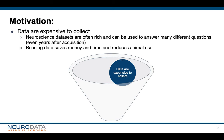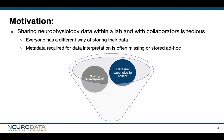First of all, neurophysiology data are expensive to collect. At the same time, neuroscience datasets are often rich and can be used to answer many different questions even years after acquisition. Reusing data saves money and time and it reduces animal use. Unfortunately, currently, data often have limited reuse outside the purview of the original experiment. Second, sharing neurophysiology data within a lab and with collaborators is tedious. Everyone has a different way of storing the data and metadata that is required for interpreting the data.